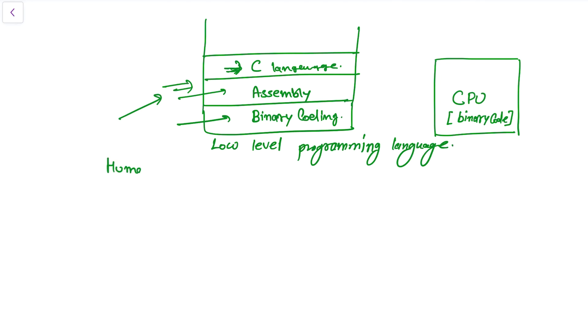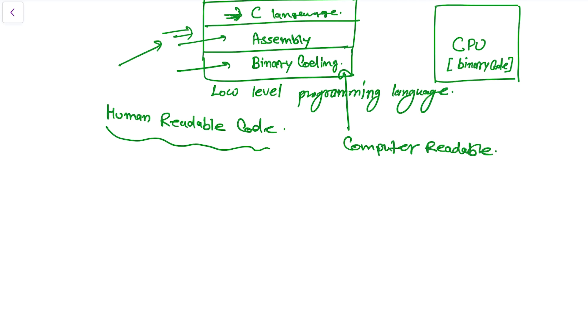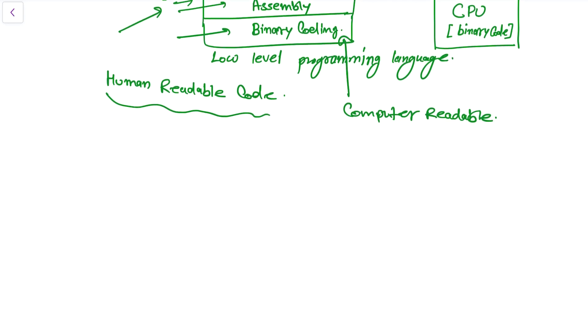However, this binary code is computer readable. So this assembly language, which is human readable code, was developed to make programming a little bit more simpler than writing code in binary numbers.